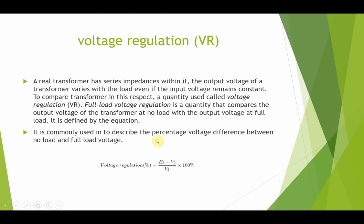Suppose we have a transformer with its secondary open, meaning no load is connected. The voltage at that point is the EMF induced in the secondary winding E2 — this is the no-load voltage. When we connect a load, there will be a voltage drop on the secondary side due to secondary current I2 and secondary impedance Z2, so the secondary terminal voltage V2 will be less than the no-load voltage. Therefore, voltage regulation equals E2 minus V2, divided by V2, multiplied by 100.